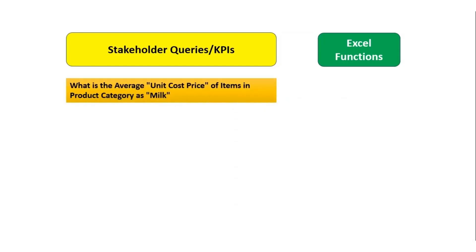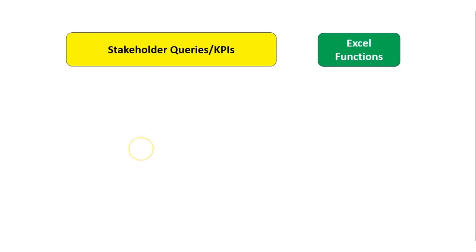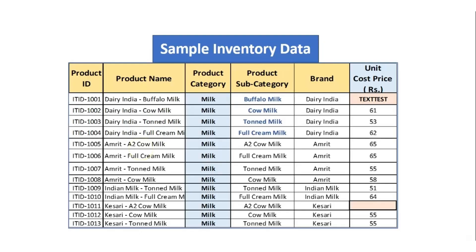The first query: the stakeholder wants to understand what is the average cost price of the items with the product category as milk. If you see the data here, column number three is the product category. The stakeholder is interested in knowing the average unit cost price for the milk category.